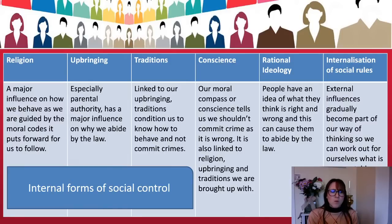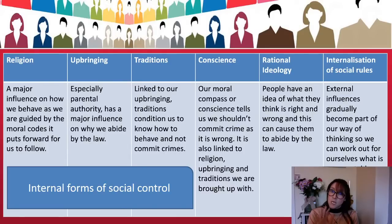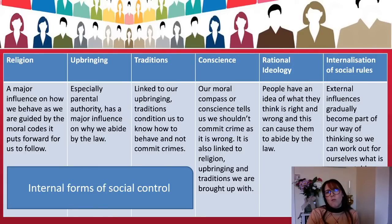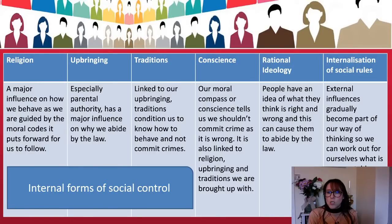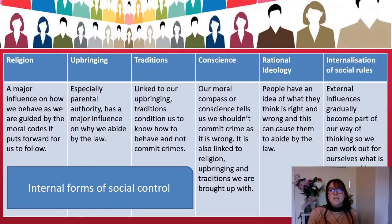Religion is a major influence on how we behave, guided by the moral codes put forward for us to follow — always give specific examples like the Ten Commandments. Upbringing, especially parental authority, has a huge influence on how we abide by the law. Traditions condition us to know how to behave and not commit crimes. Conscience is your own compass telling you that you shouldn't commit crimes because it's wrong — linked to religion, upbringing and tradition. Rational ideology is where people have an idea of what they think is right and wrong. Internalisation of social rules is where your external influences gradually become part of how you think, and what is unacceptable therefore prevents you from committing crimes.